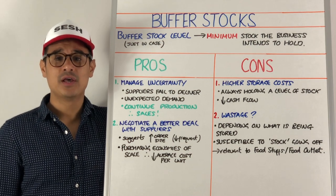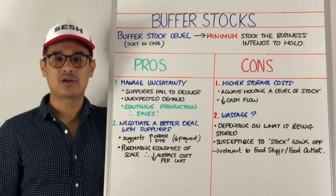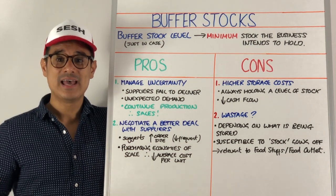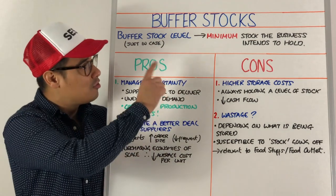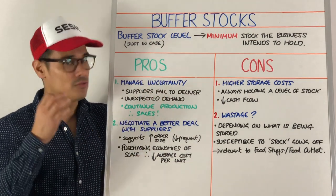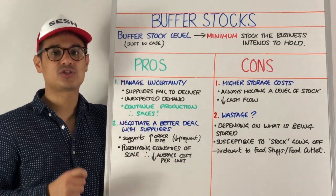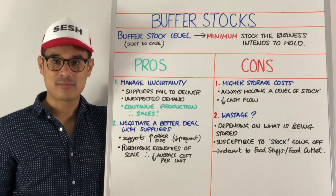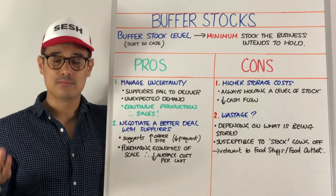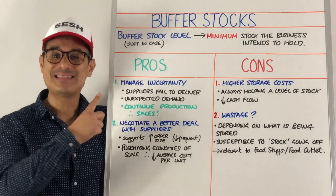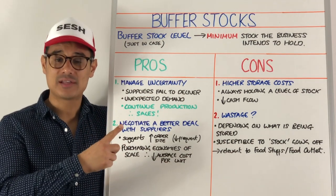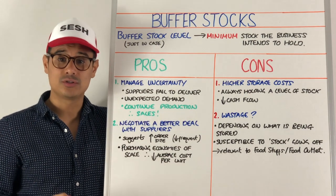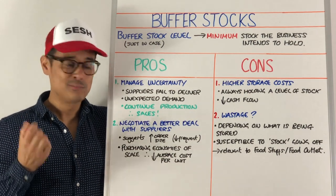Let's have a session on buffer stocks. The buffer stock level, sometimes called 'just in case', is basically the minimum stock a business intends to hold. There are diagrams for buffer stocks that you must learn — click the card to learn about that. Here we're going to look at the pros and cons of buffer stocks.